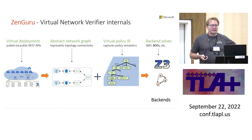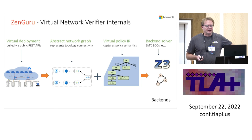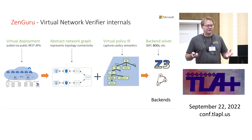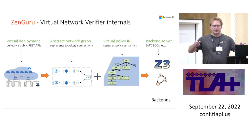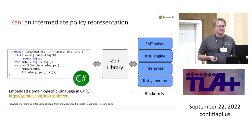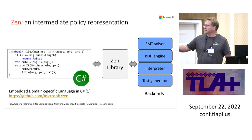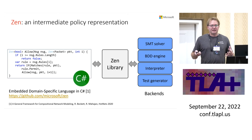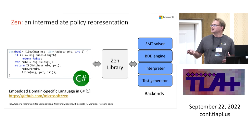On top of SIN we're building a tool called SIN Guru, which allows network verification of customer networks. In a virtual network, customers describe their connectivity, and then you can check reachability. You write the policy — the specification for each of the virtual network devices — in a high-level language, and that maps into the back ends.